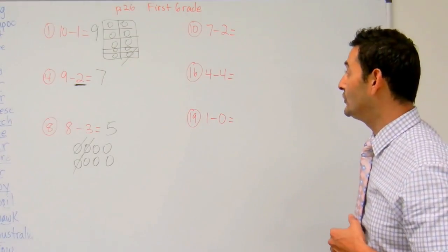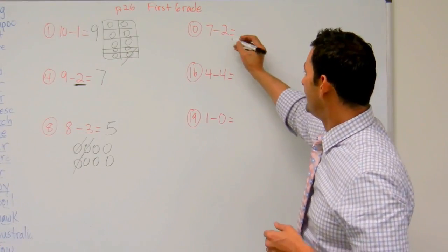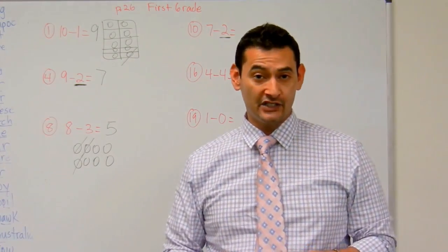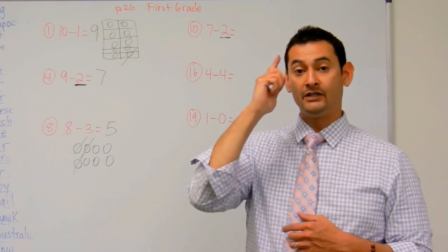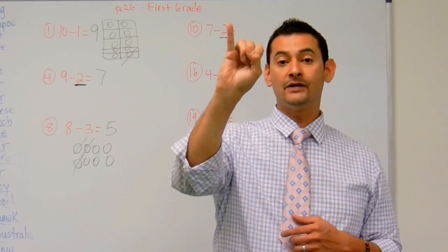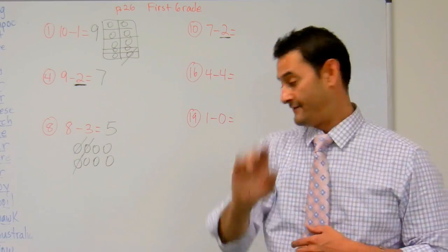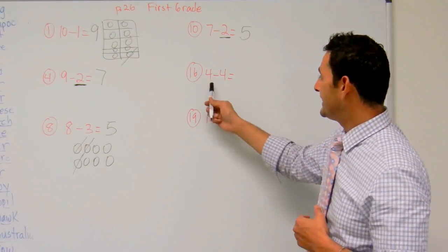Now let's do 7 minus 2. That's number 10. I'm going to start with 2, and I'm going to relate subtraction to addition, and I'm going to stop at 7. So start with 2, stop at 7. Ready? Put 2 in your head. 2, 3, 4, 5, 6, 7. How many do I have? 5. 7 minus 2 is 5.